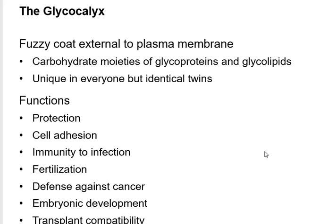The sugars on the outside of the cell serve many purposes: defense against cancer, transplant compatibility, fertilization — you only want one sperm to get through — and cell adhesion. If the sugars attached to the proteins don't match up, your immune system will destroy the foreign material — good if it's an invading pathogen, unfortunate if it's a donated organ.